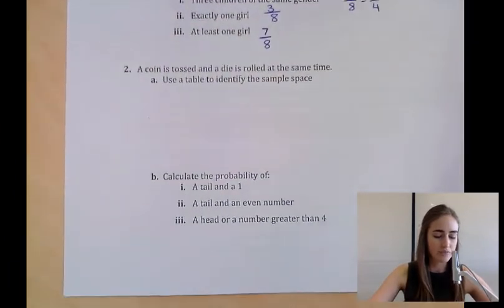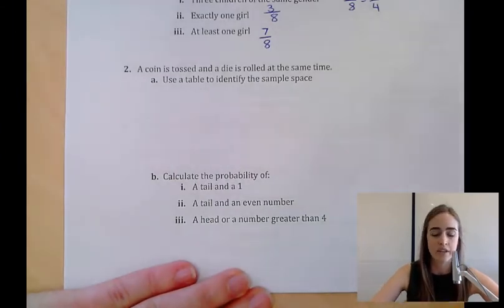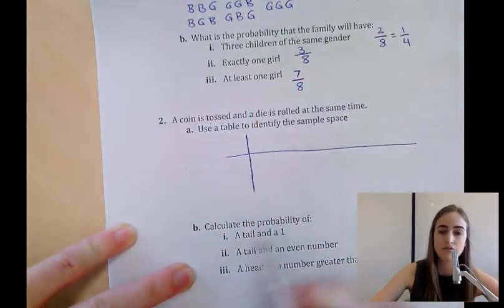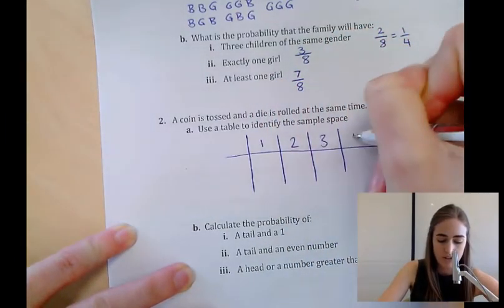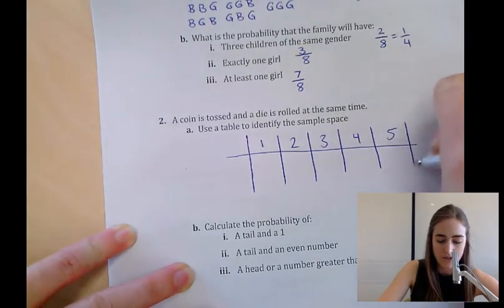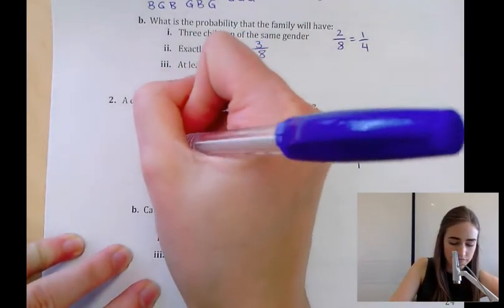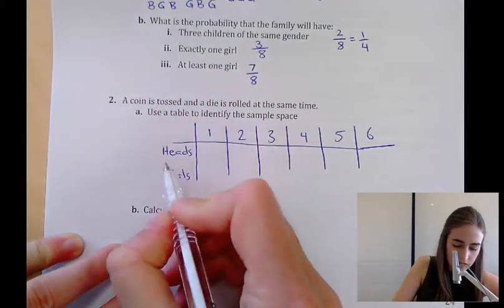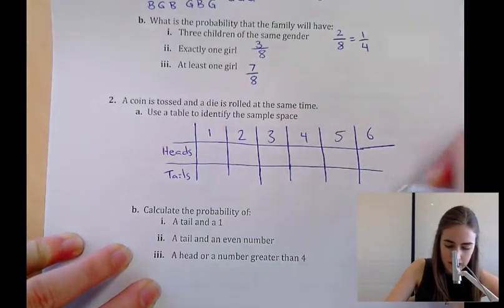Our second example says a coin is tossed and a die is rolled at the same time. Use a table to identify the sample space. Across the top, I'm going to put all the options for our die: one, two, three, four, five, or six. And down the side, I'm going to put heads and tails.